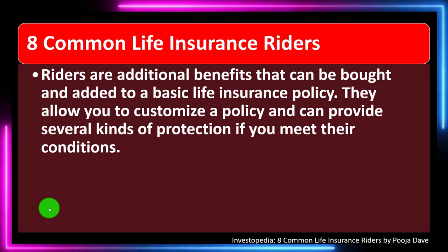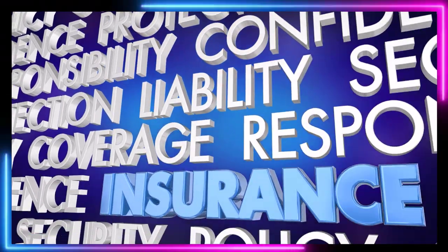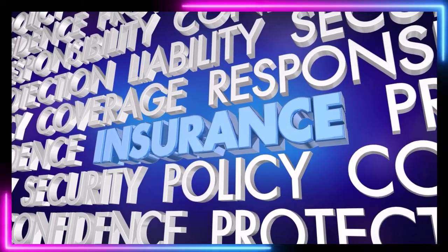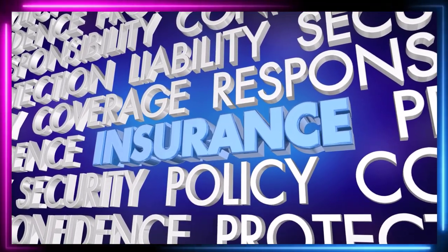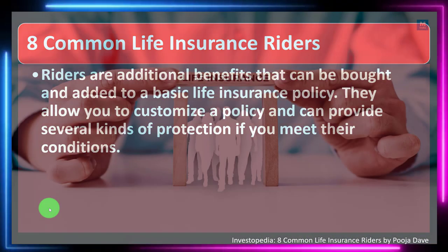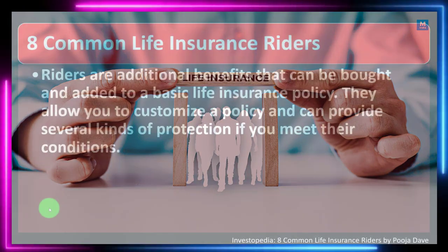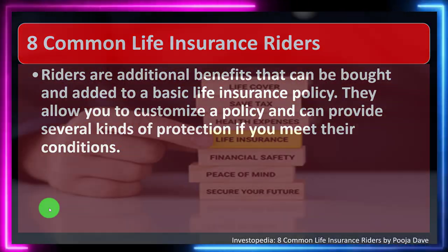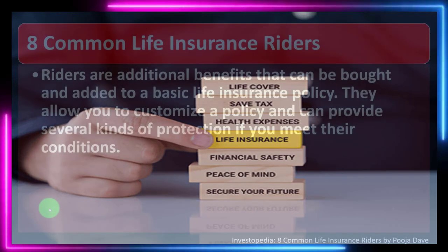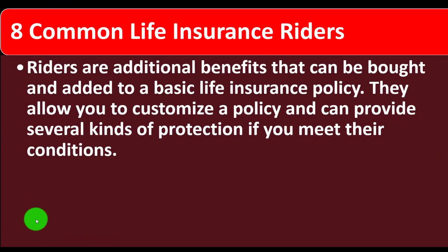In prior presentations we've been taking a look at insurance in general, then moving to life insurance, keeping in mind the two major categories: term life insurance, or pure life insurance — the baseline we want to compare all other life insurance to — and then permanent life insurance. Keeping those categories in mind, we're now talking about the eight common life insurance riders.